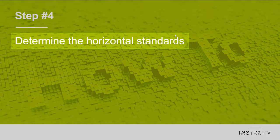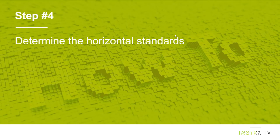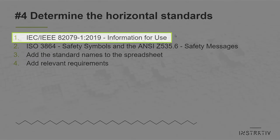In step four we're going to determine the horizontal standards. Besides the vertical standards that apply to a specific product group, horizontal standards apply to a broad range of products. The most important one is the 82079 standard on information for use, which contains almost all guidelines to create your user manual and gives requirements on the content, presentation, and structure.